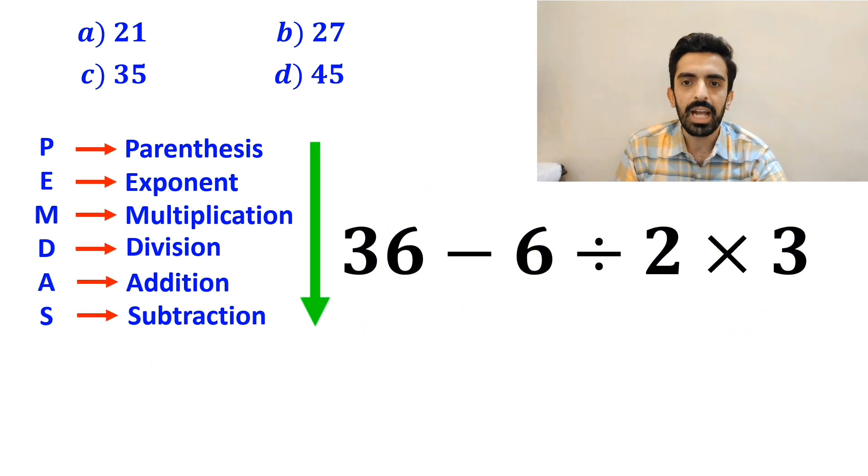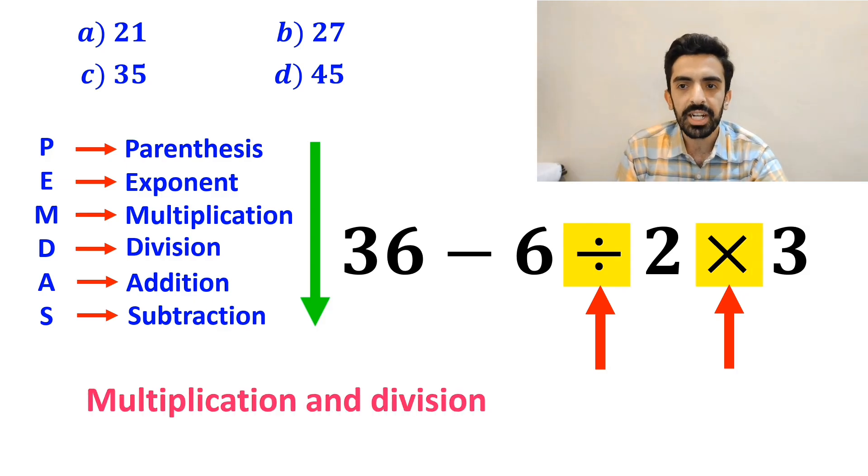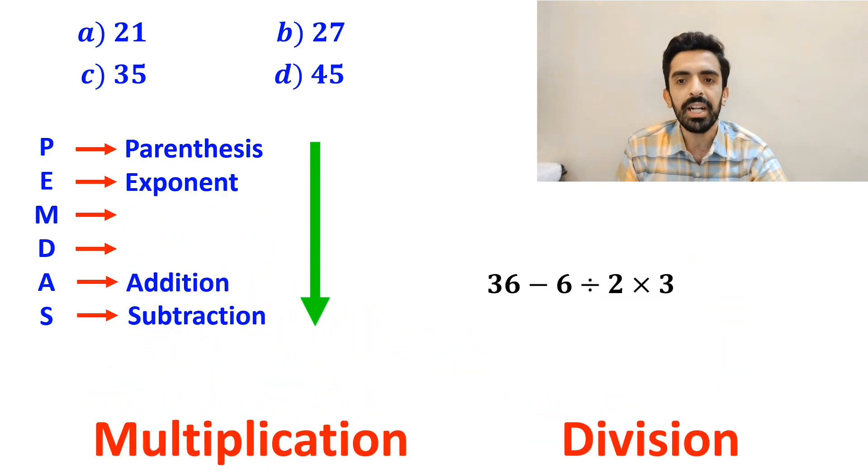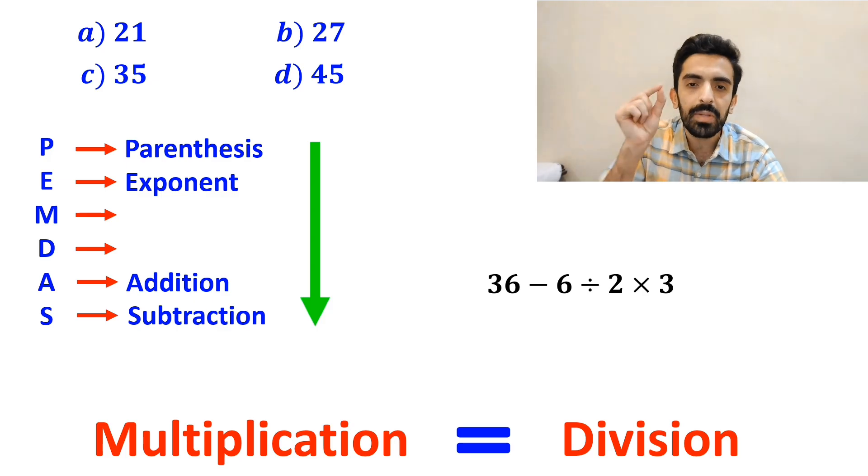In the next step, we need to handle the division and multiplication, since multiplication and division have higher priority than subtraction. However, it is very important to note that in the PEMDAS rule, multiplication and division have exactly the same level of priority.